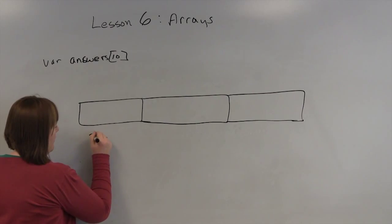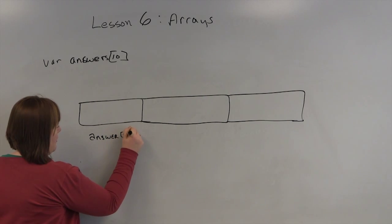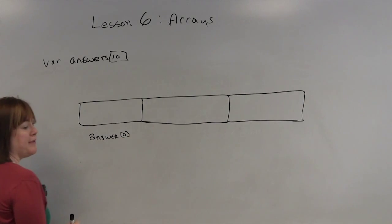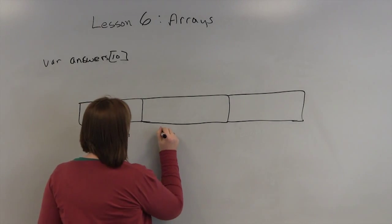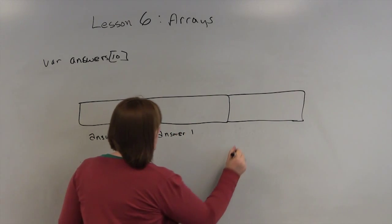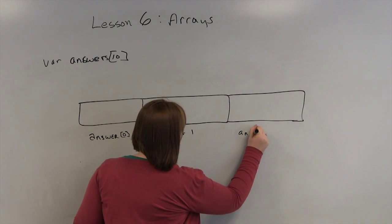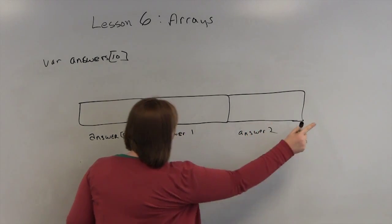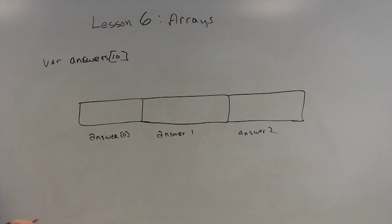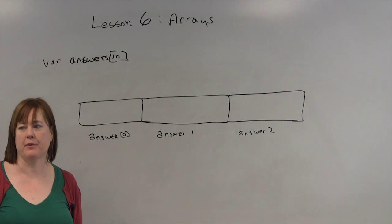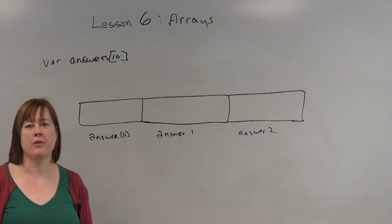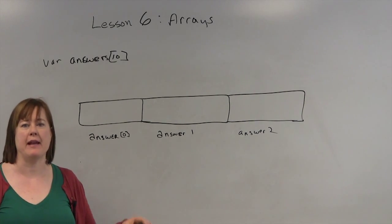This is answer 0. And that's a subscript. This would be answer 1. And this would be answer 2. And it would go all the way through 9. With arrays, you always start counting at 0. So you have 10 memory spots numbered 0, 1, 2, 3, 4, 5, 6, 7, 8, 9.